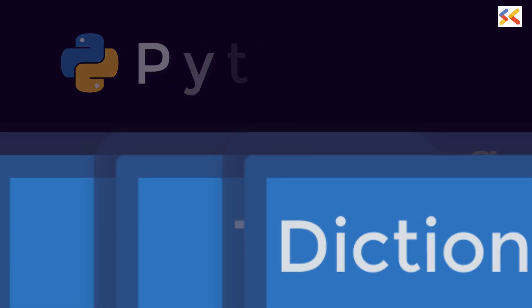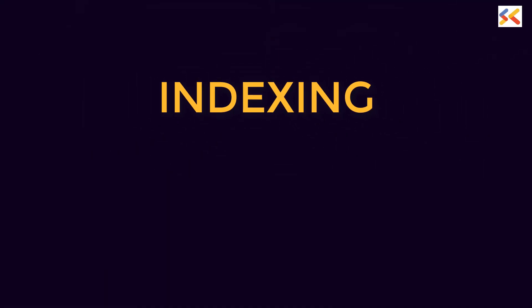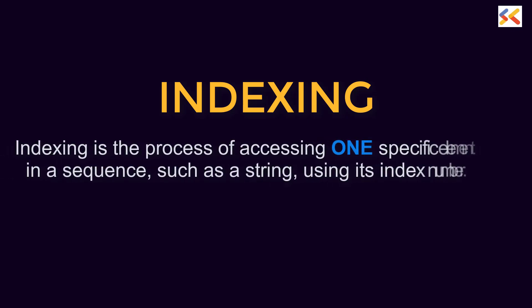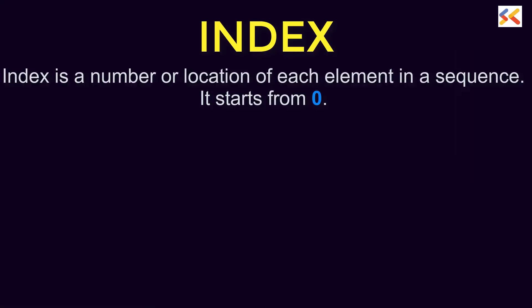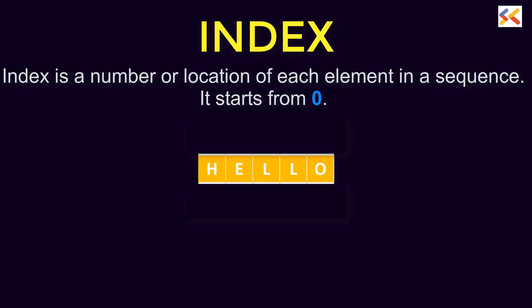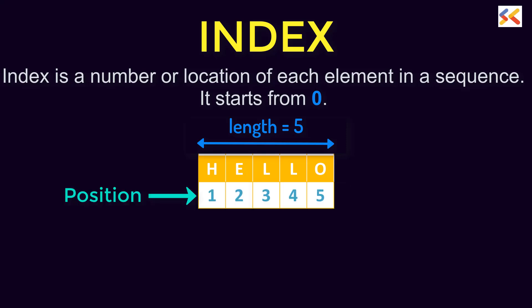We will start by learning how to access individual elements using indexing. In Python, indexing refers to the process of accessing one specific element in a sequence, such as a string, using its index number. Before learning indexing, you need to know what is an index. Index is a number or location of each element in a sequence. It starts from 0. If we take the example of the string 'Hello', it has length 5 and when we talk of position, we say H is at position 1, E at 2 and so on.